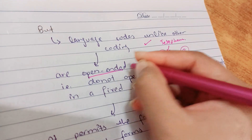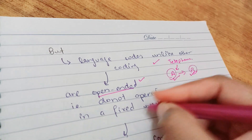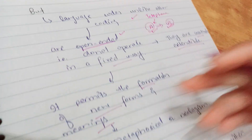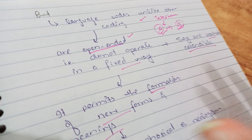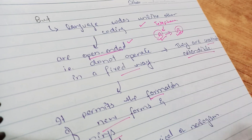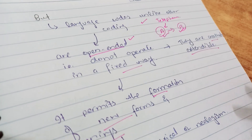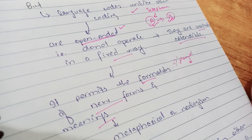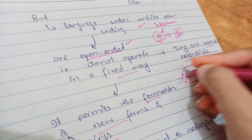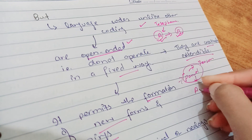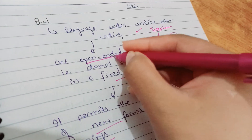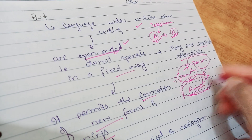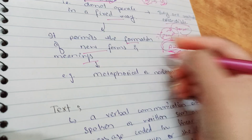Language codes are open-ended — they do not operate in a fixed way. We can create new forms and new meanings; they are creative and extendable. For example, suppose I have nicknamed a person 'Panda.' If I talk to someone who doesn't know this and say 'I saw Panda right there,' that person would think I am talking about the animal, while in my mind I am talking about the person. This is what open-ended codes mean — my intended meaning was not correctly delivered, but the other person still derived their own meaning from the code.